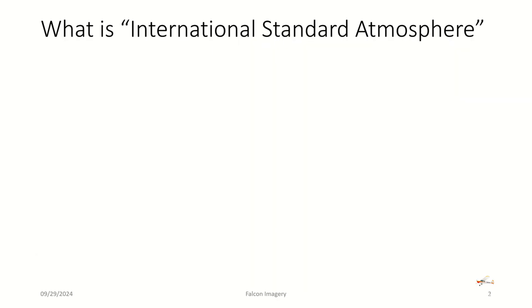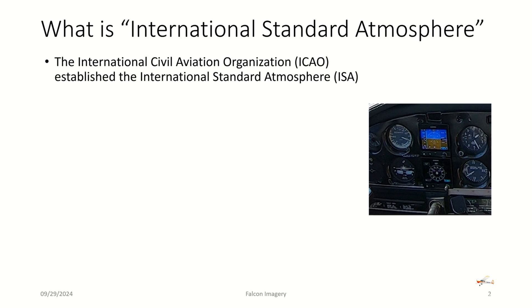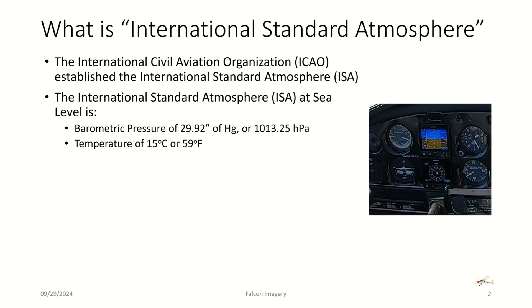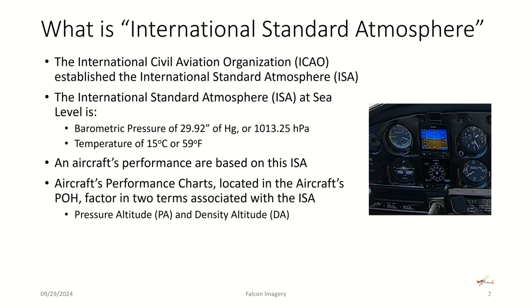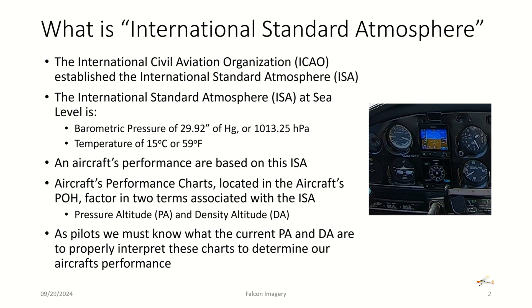How to calculate pressure altitude and density altitude. First of all, we need to understand what the International Standard Atmosphere is. The International Civil Aviation Organization established years ago the International Standard Atmosphere, and what that translates into is that at sea level it is 29.92 inches of mercury or 1013.25 millibars of pressure with a temperature of 15 degrees Celsius or 59 degrees Fahrenheit. Aircraft performance is based on this standard atmosphere. Our aircraft's performance charts located in the pilot operating handbook factor in two terms associated with the ISA that we really need to be aware of: pressure altitude and density altitude. So as pilots, we must know what the current pressure altitude and density altitude are to properly interpret these charts to determine our aircraft's performance.